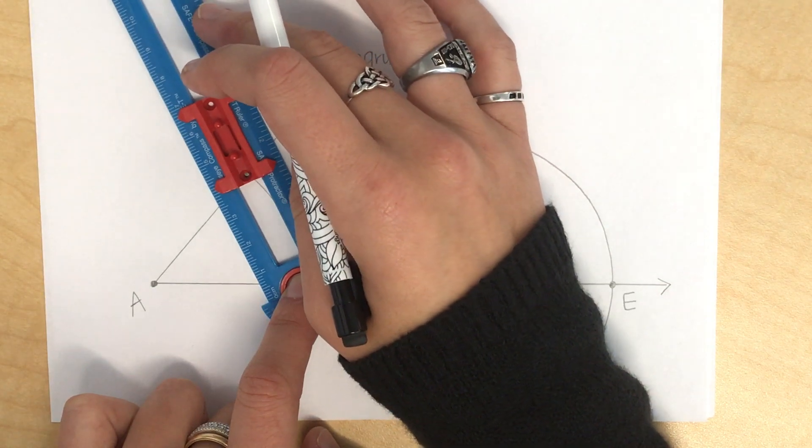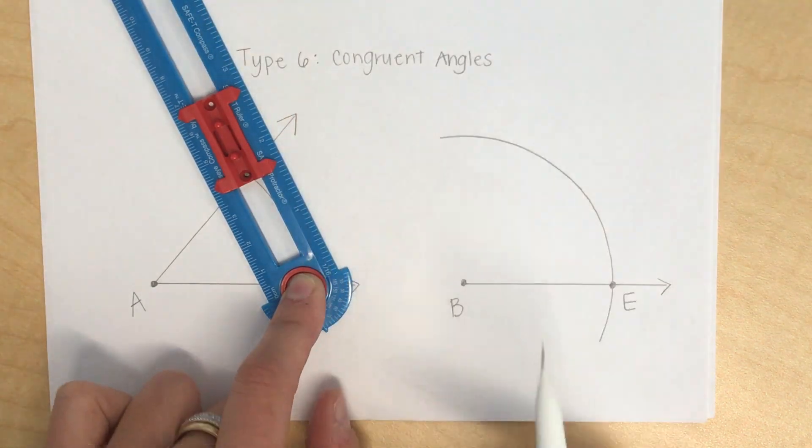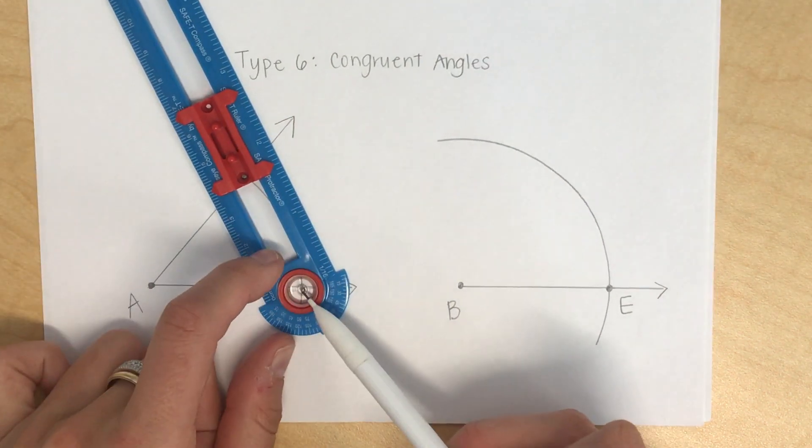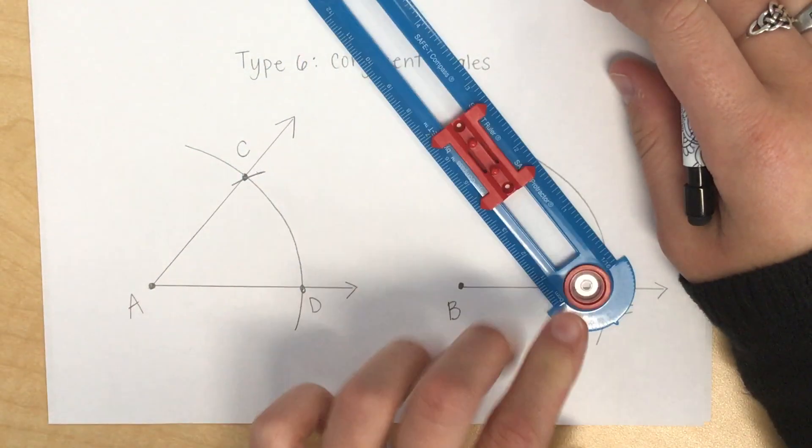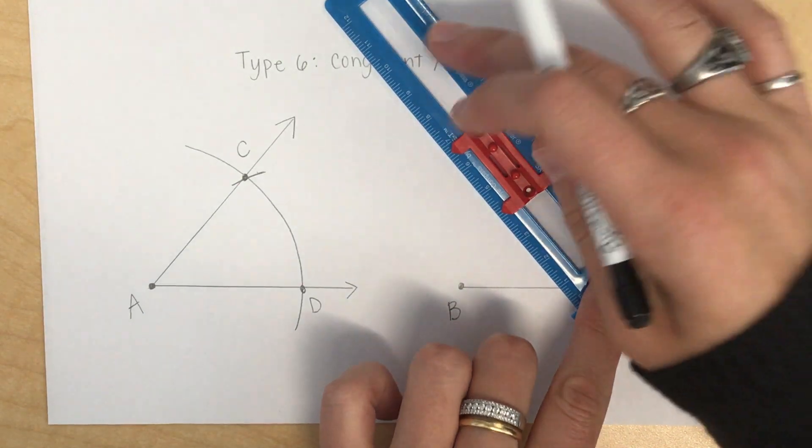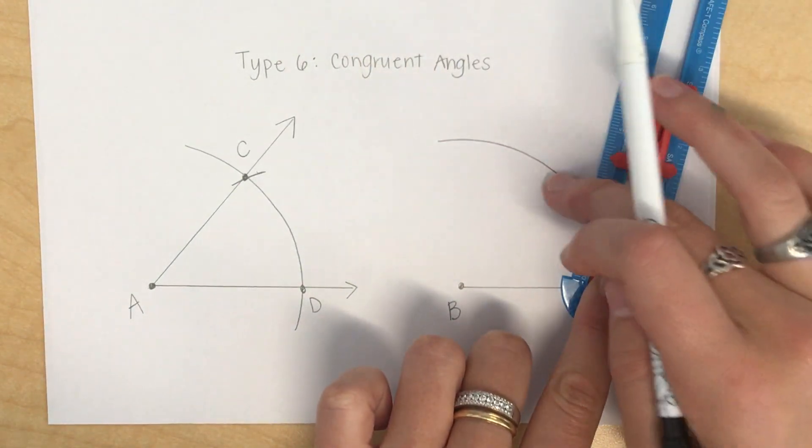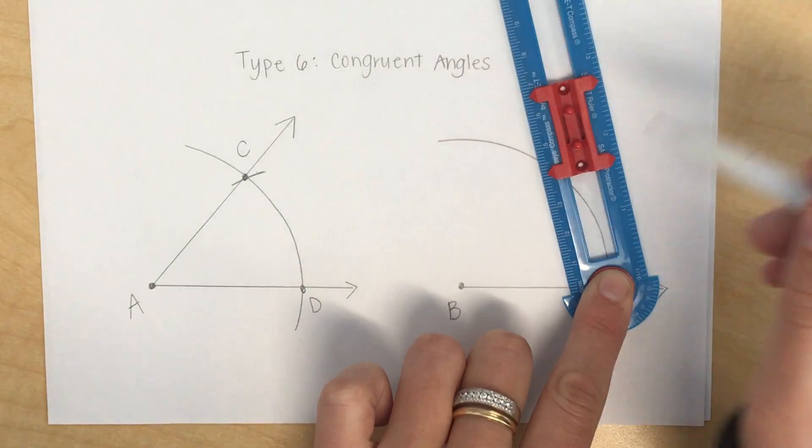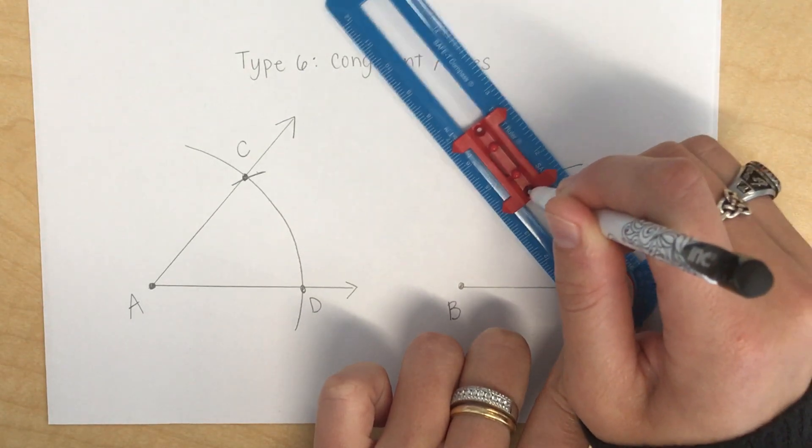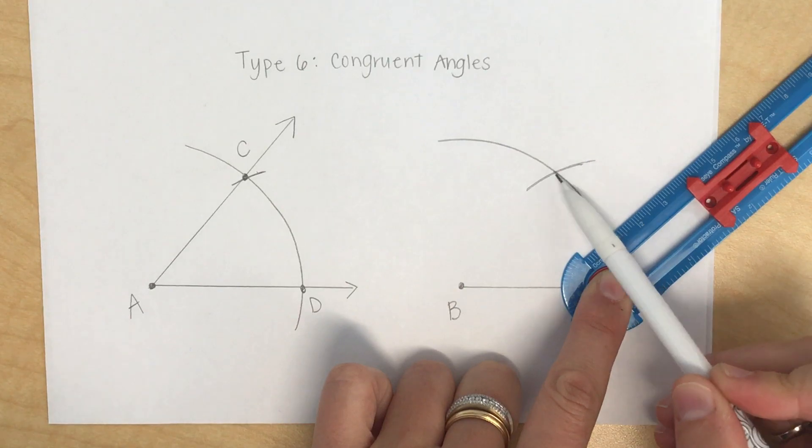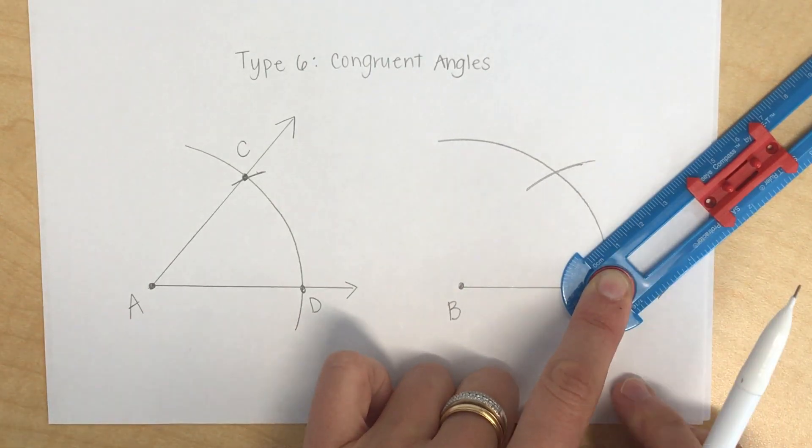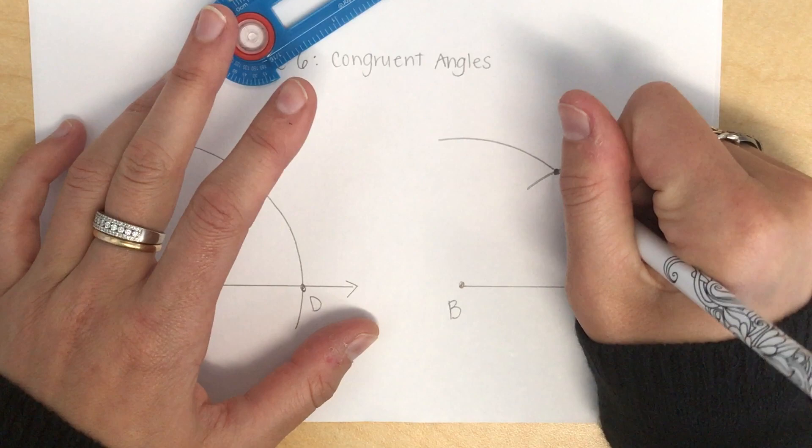Now, keeping that radius from C to D, I'm going to take my compass. I'm going to take the point. I'm going to put it over here on E. Now, from here, I'm going to draw an arc that intersects the arc that I've already drawn. Okay, where my two arcs intersect, I'm going to name this point P.